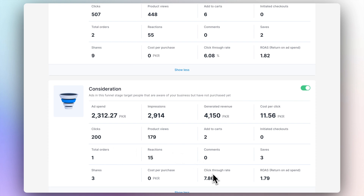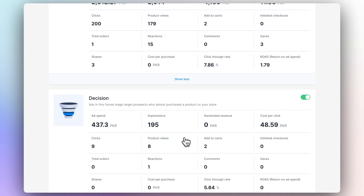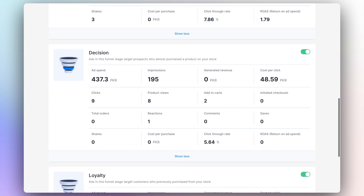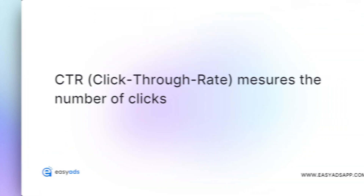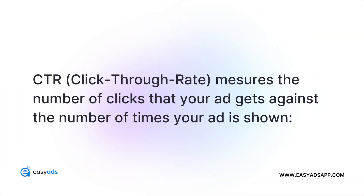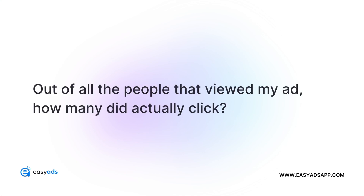The metrics in all of the advertising phases are identical. With all of these metrics and data available, how do we know if a campaign is performing good or bad? To answer this question, all you need to look at is your CTR or click-through rate. A CTR measures the number of clicks that your ad gets against the number of times your ad is shown. In other words, this metric answers the question: out of all of the people that viewed my ads, how many people did actually click on my ads?